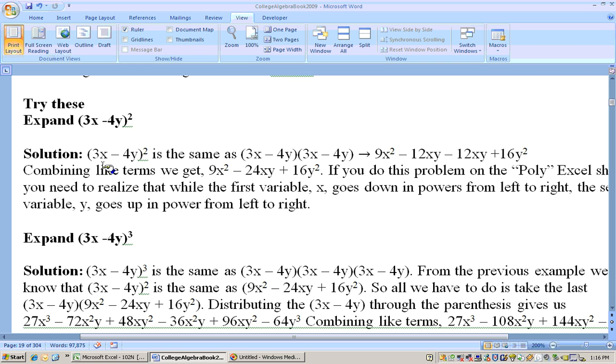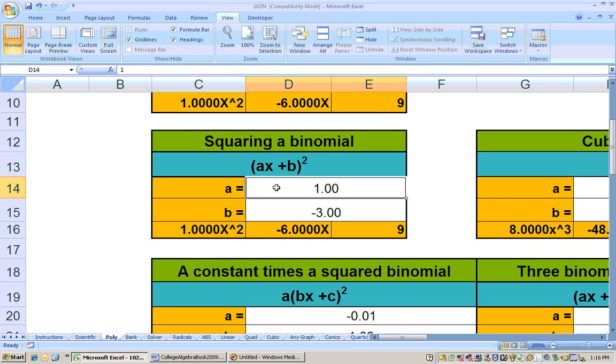Okay, so a 3 and a minus 4. And we get this right here, 9x squared minus 24x plus 16. But now we've got to realize that the y's would be in there. There's no y here. A y to the first power here and a y squared here. So it would be 9x squared minus 24xy plus 16y squared. And I think that's what we got right there.